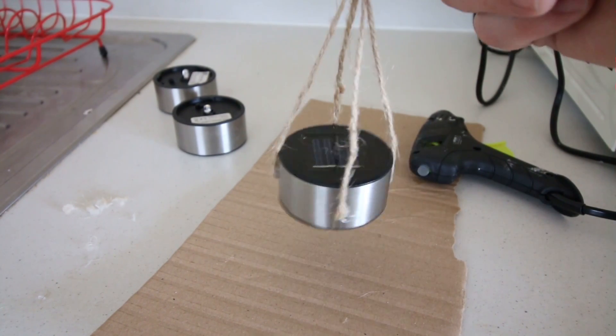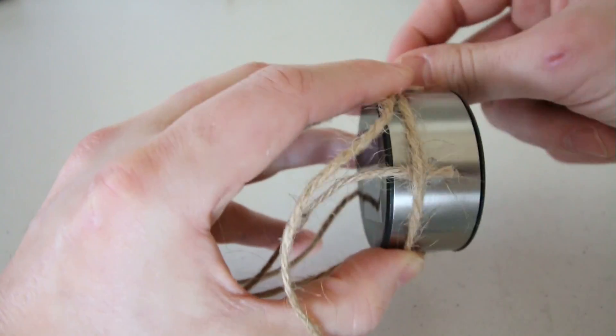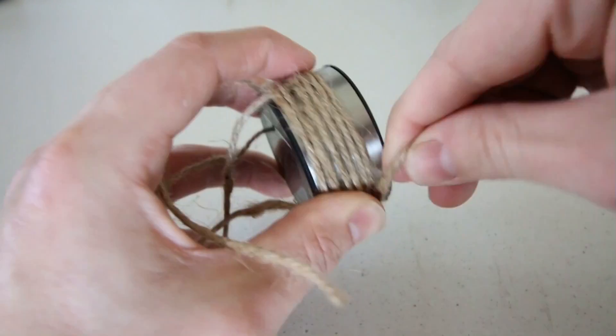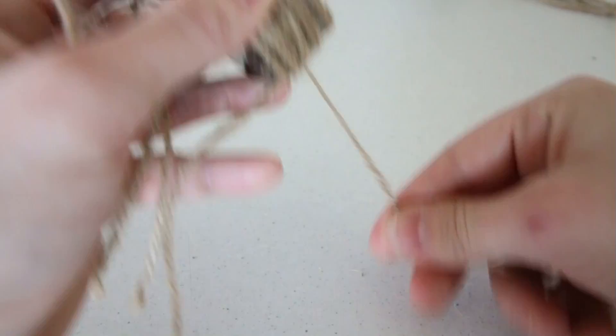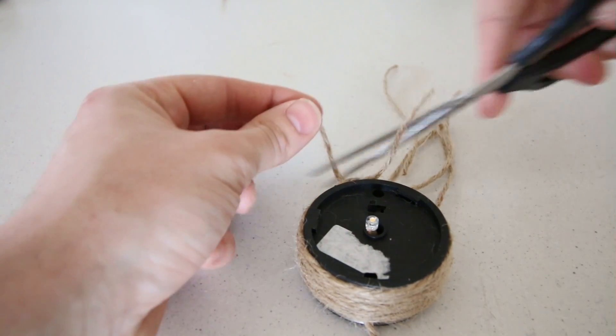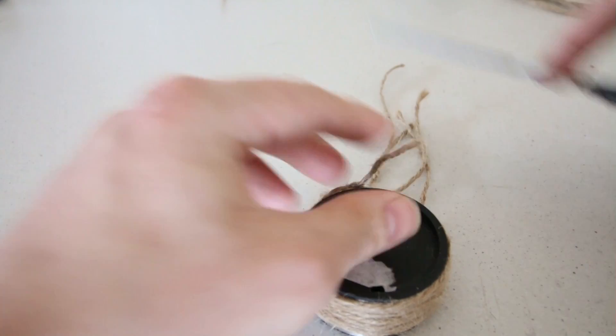There we go. I then used a longer length of string and wrapped it around the outer part of the panel. I then tied it all together and chopped off the remaining ends, and it's looking good.